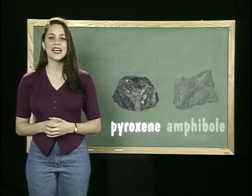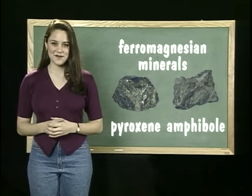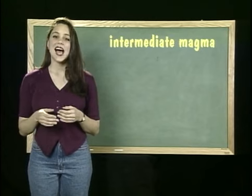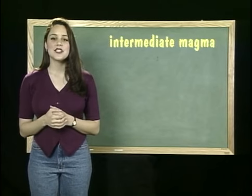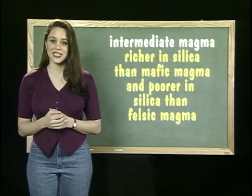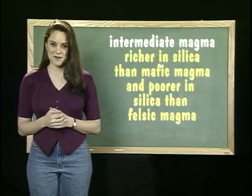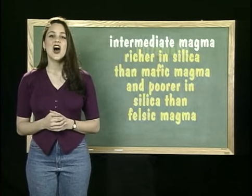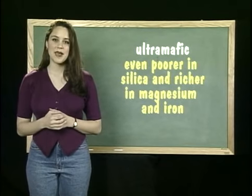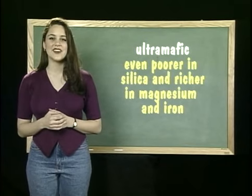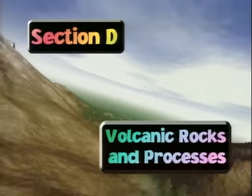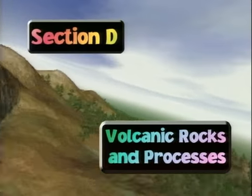Mafic minerals composed largely of iron and magnesium are called ferromagnesian minerals. Pyroxene and amphibole are ferromagnesian minerals. Intermediate magma has a mineral composition richer in silica than mafic magma and poorer in silica than felsic magma. Ultramafic rocks are even poorer in silica and richer in magnesium and iron than mafic magma.